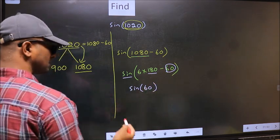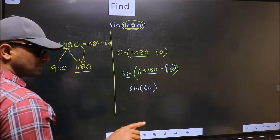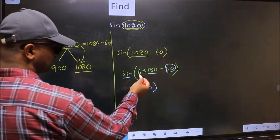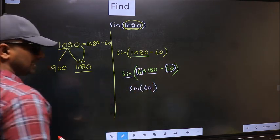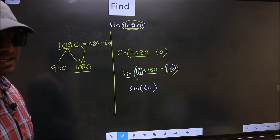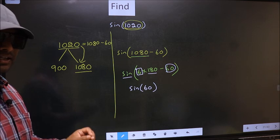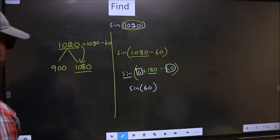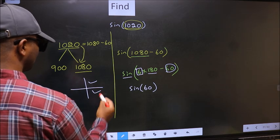Now the question is, will we get here plus or minus? To answer that, we should look at the number before 180, that is 6. And 6 is even. And all the even multiples of 180 lie in either the first or the fourth quadrant.